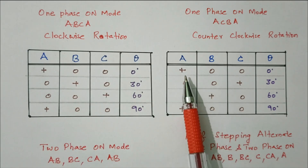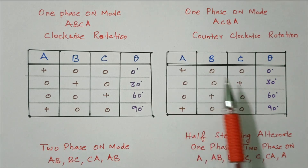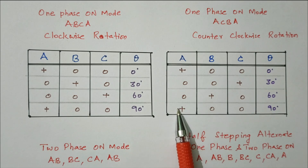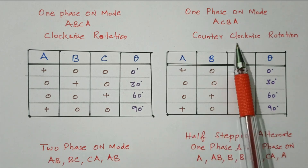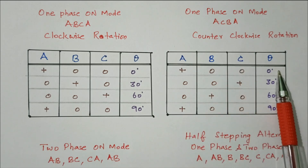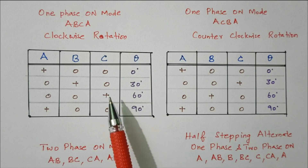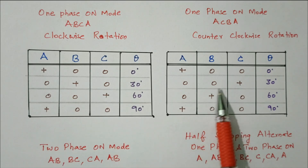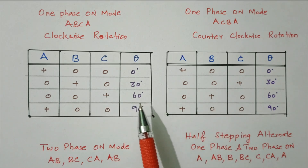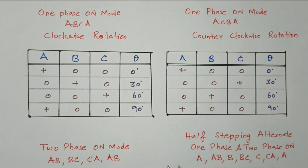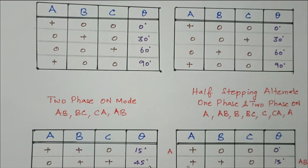The same process but going in the order a, c, b, a will rotate the motor in the counterclockwise direction with the same step angles: 0, 30, 60, 90 degrees. So there are two one-phase-on modes: clockwise and counterclockwise. Now we will see the two-phase-on mode.